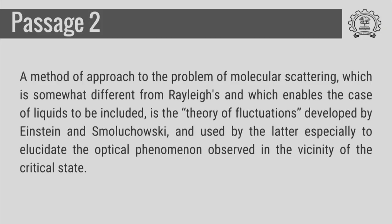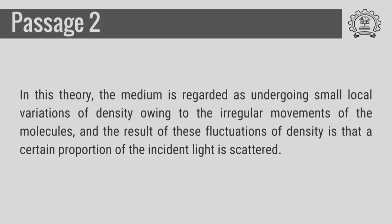The second passage: 'A method of approach to the problem of molecular scattering which is somewhat different from Rayleigh's, and which enables the case of liquids to be included, is the theory of fluctuations developed by Einstein and Smoluchowski, and used by the latter especially to elucidate the optical phenomenon observed in the vicinity of the critical state. In this theory the medium is regarded as undergoing small local variations of density owing to the irregular movements of the molecules, and the result of these fluctuations of density is that a certain proportion of the incident light is scattered.'